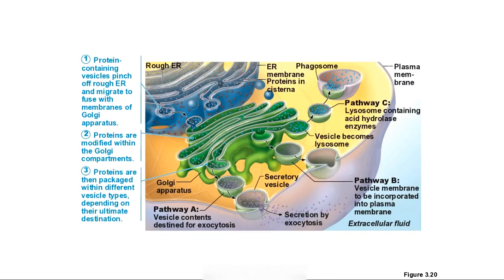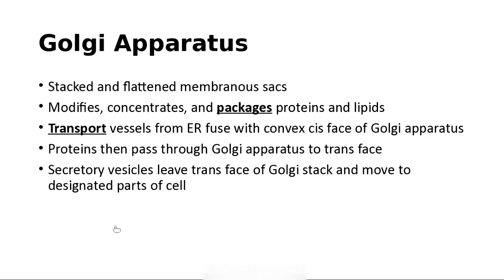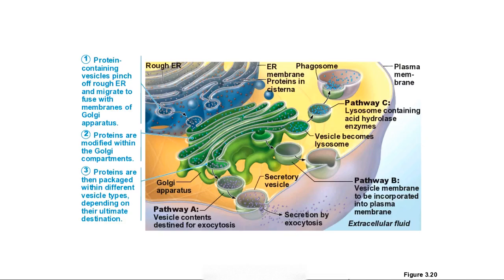The Golgi apparatus, off of the endoplasmic reticulum, packages and transports materials — in this case exporting them. Secretory vesicles can be made and exported that way — secretion by exocytosis.